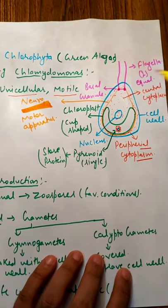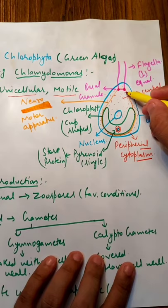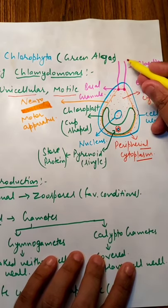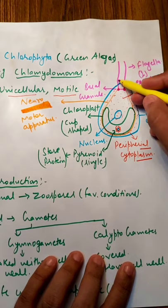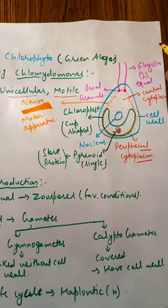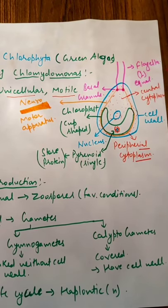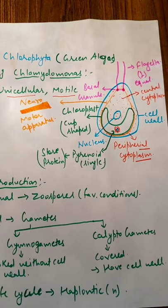इसके top side पे basal granules present होंगे और इन basal granules से flagella arise होते हैं। यहाँ से दो flagella arise होंगे जो equal size के होंगे — same structure, same shape। वो basal granules से arise होते हैं, इसी को हम flagella बोलते हैं जो Chlamydomonas की movement में help करते हैं।